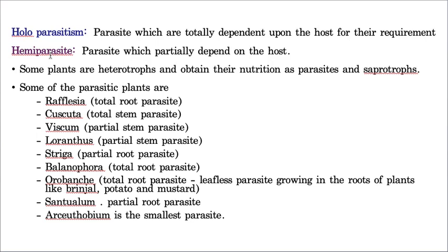Holoparasitism means a parasite is completely dependent on the host. Hemiparasitism means it is only partly dependent on the host. Examples include Rafflesia, which is a total root parasite (holoparasitism), and Cuscuta, which is a total stem parasite (holoparasitism). Viscum is a partial stem parasite, making it an example of hemiparasitism. These are very important examples frequently asked in exams — please read all the examples mentioned carefully.